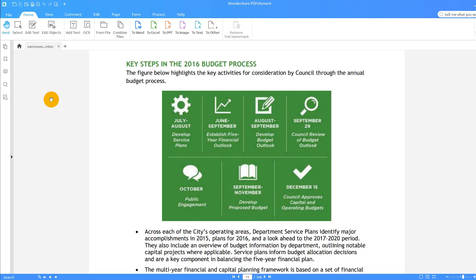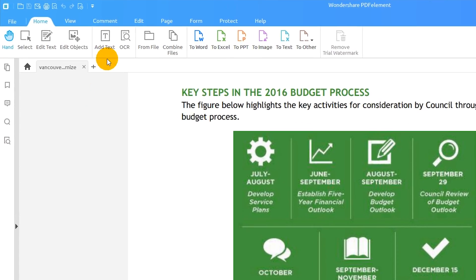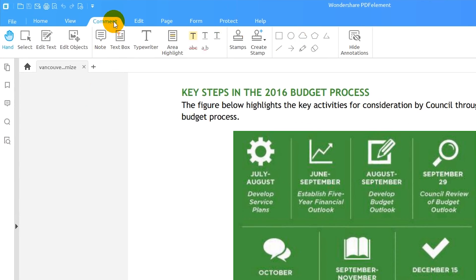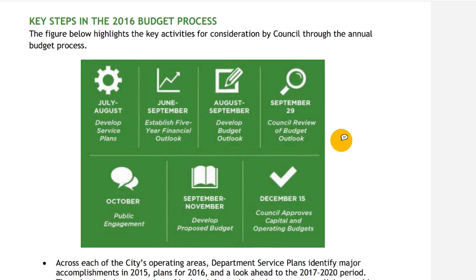Here is a PDF report that has been shared with me by a co-worker. I have some thoughts on the material in this report that I want to communicate. I'll navigate to the comment tab on the ribbon, which contains my annotation tools, and I'll select Note, which is also known as a sticky note. I'll click where I want my note to appear, then start typing.